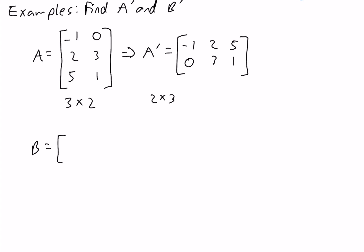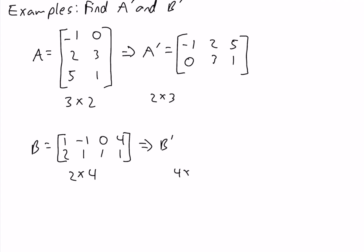Now suppose we have a matrix B with values 1, negative 1, 0, 4, 2, 1, 1, 1. This is a 2 by 4 matrix with two rows and four columns. So the transpose of B, which we write B prime, is going to be a 4 by 2 matrix with four rows and two columns. The first row of B becomes the first column of B prime: 1, negative 1, 0, 4. And the second row of B becomes the second column of B prime: 2, 1, 1, 1. That's how you take the transpose of a matrix.